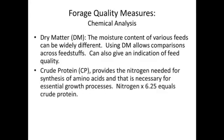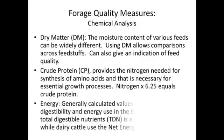Crude protein is another key factor. It measures nitrogen times 6.25 to give us that crude protein value. It's essential for the synthesis of amino acids that are necessary for growth processes, and is also important in milk production and muscle development.